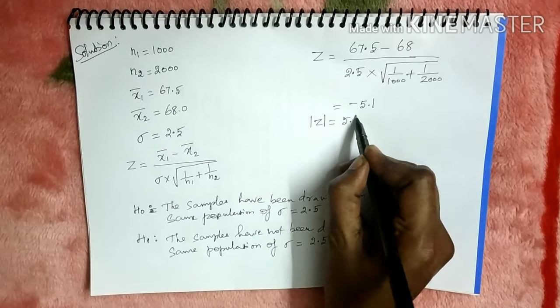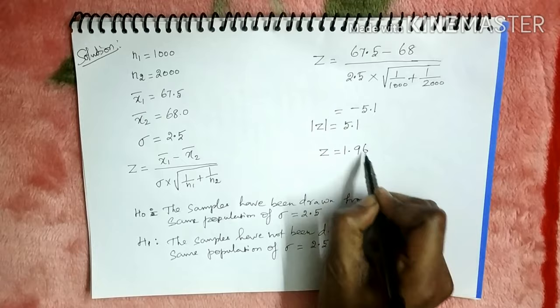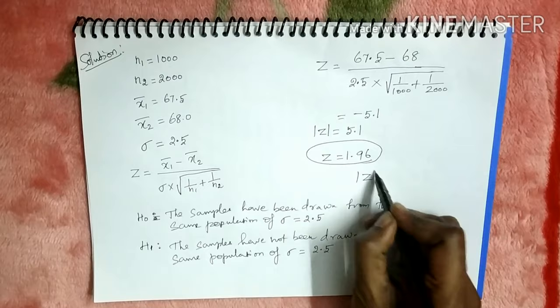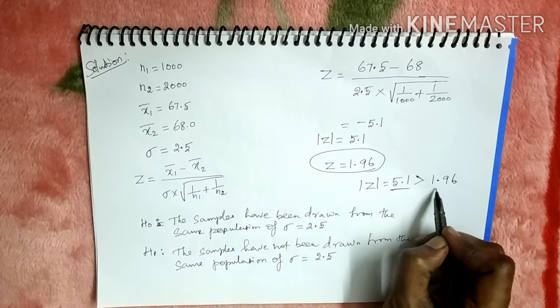The Z table value at 5% level of significance is 1.96. The calculated value is 5.1, which is greater than the table value.